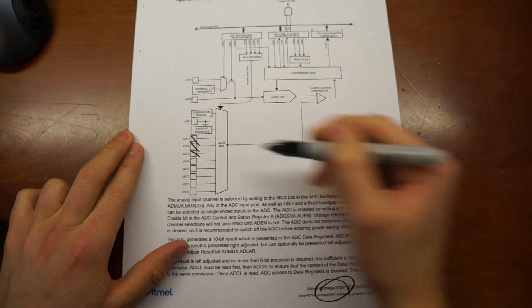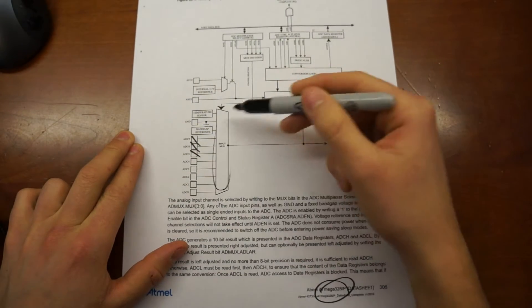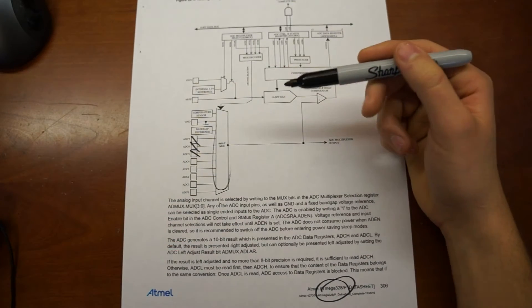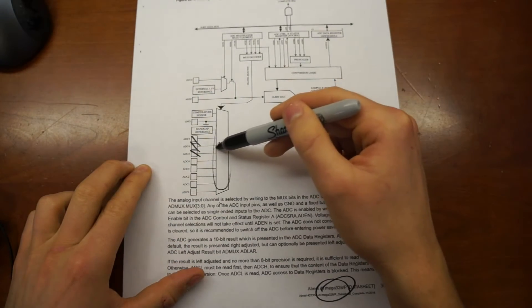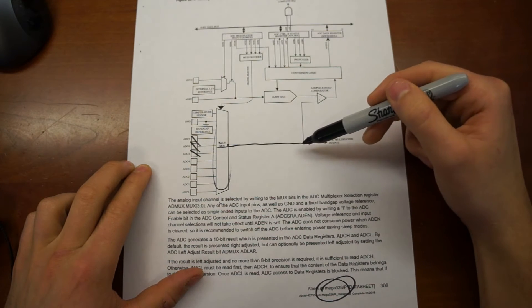So there's, these are all the analog inputs that I'm assuming are chosen by this multiplexer. You know, given the one that you want to read, it'll send through the ADC value, the value on that analog input pin.